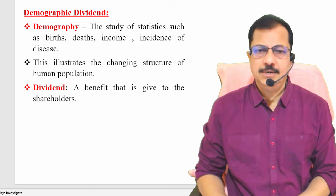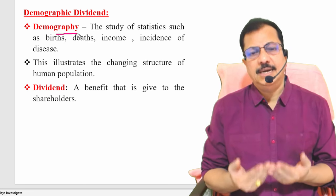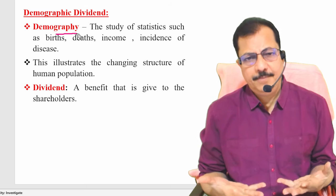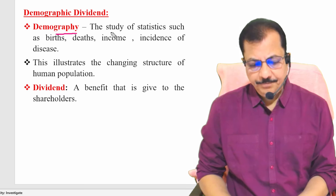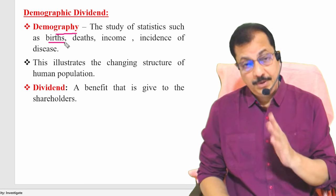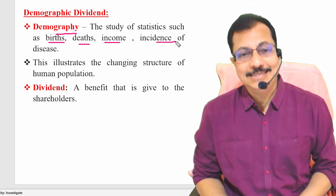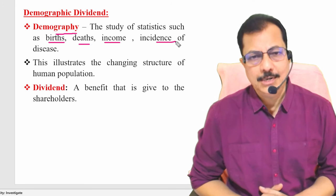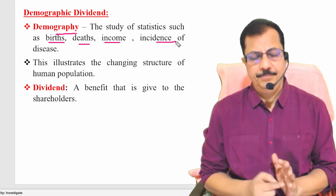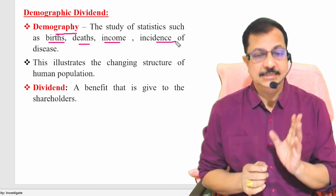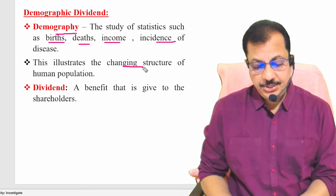Generally, when you use the word demography, it is a study of a particular area — in a country, what are the births, how many people are dying, what is the income, and what is the incidence of various diseases. All these statistics put together is called demography — the statistics related to people with respect to births, deaths, income, and diseases.